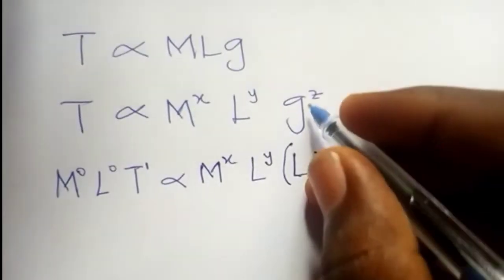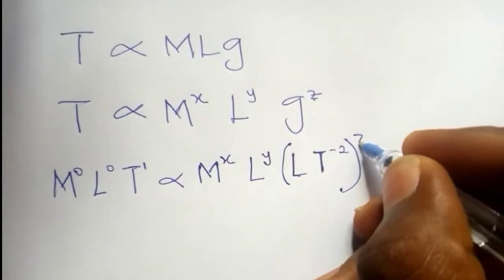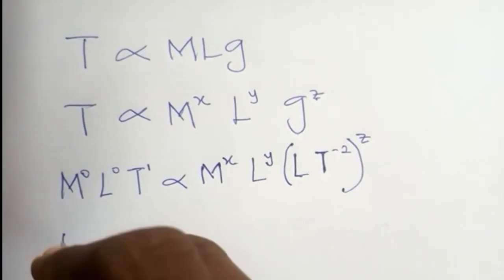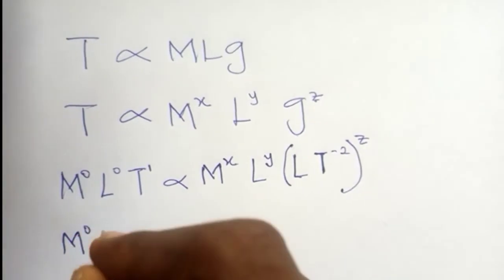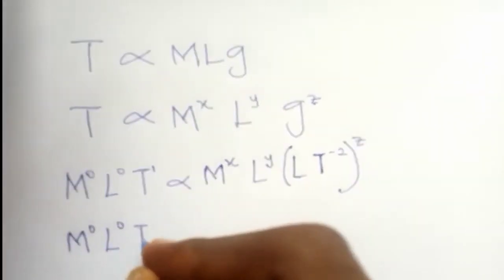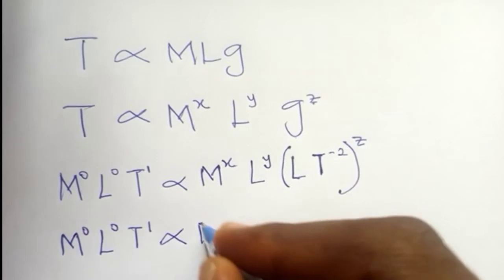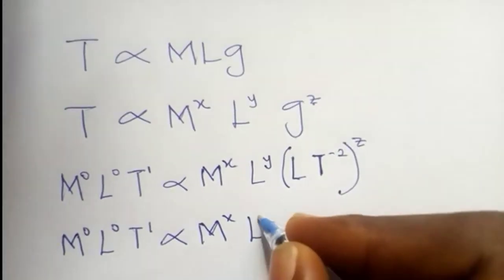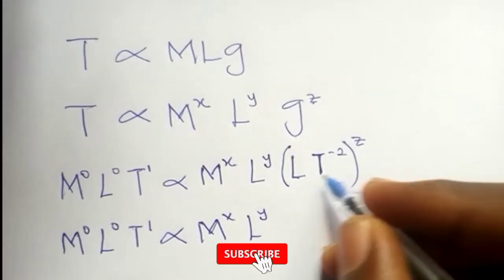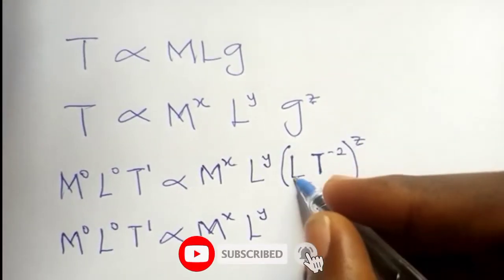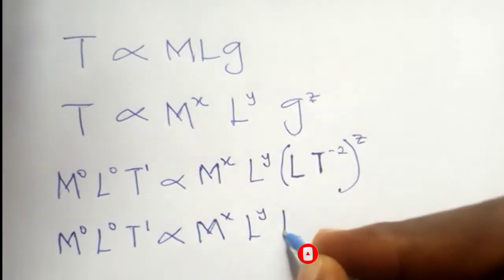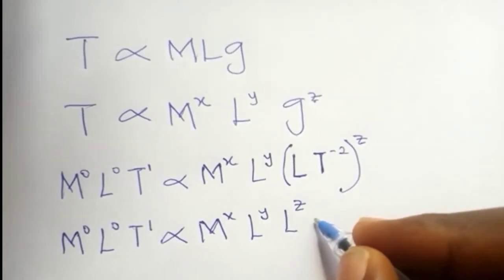This is our g, LT raised to power of minus 2. Don't forget there's a z over the g, so put it back. We have M raised to 0, L raised to 0, T raised to power of 1, still proportional to M raised to x times L raised to y.